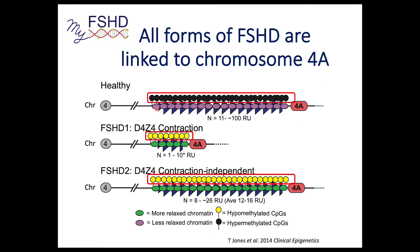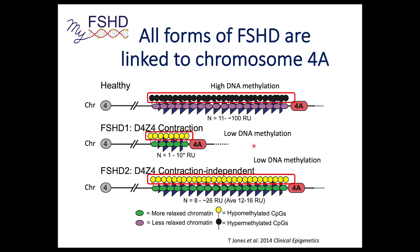In the healthy situation, you have heavy methylation indicated by these black lollipops. In FSHD1, you lose that methylation during the contraction, as indicated by yellow lollipops showing loss of methylation. In FSHD2, which does not have the contraction, you still have lost that methylation at the FSHD locus. So FSHD1 and 2 are linked epigenetically due to low DNA methylation at the FSHD locus.